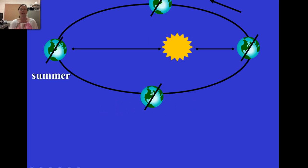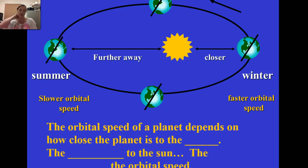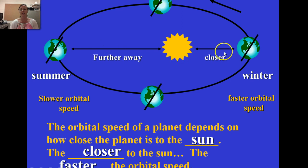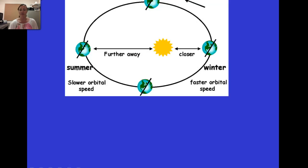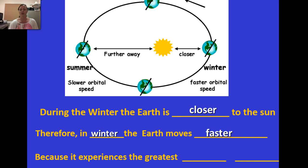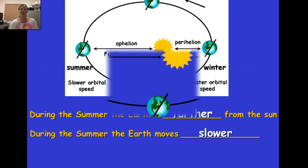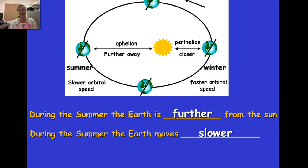What does this mean for us? As mentioned when we studied seasons, at different times of the year Earth is at a different location around the sun. The orbital speed depends on how close Earth is to the sun — the closer to the sun, the faster the orbital speed. We are actually closer to the sun during winter and farther away in summer, so Earth moves faster in winter due to greater gravitational attraction and slower in summer as it moves along its orbit.